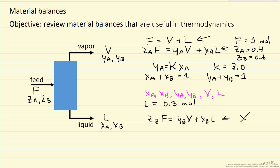However, once we've specified L, now we can substitute into the mass balance for A. So ZA we're given 0.4, F is one mole, so YA I'm going to write in terms of XA using this equation, YA is equal to K, which is 3.0 times XA, and V, well I specified L is 0.3, so V must be 0.7 moles to satisfy this equation.